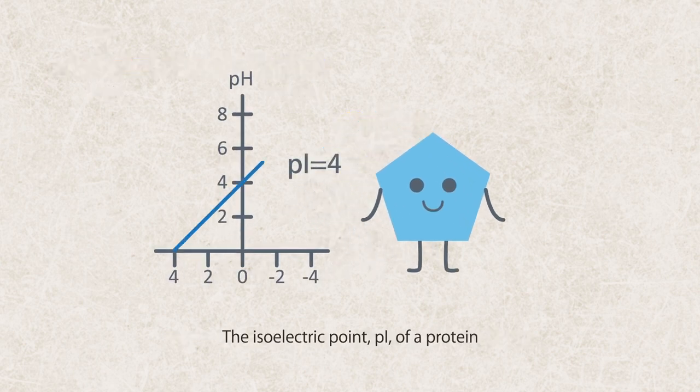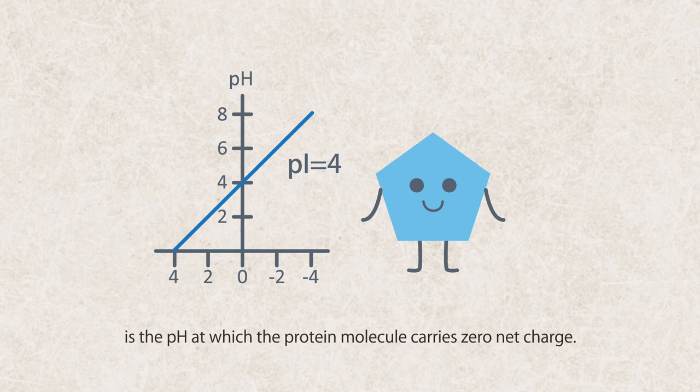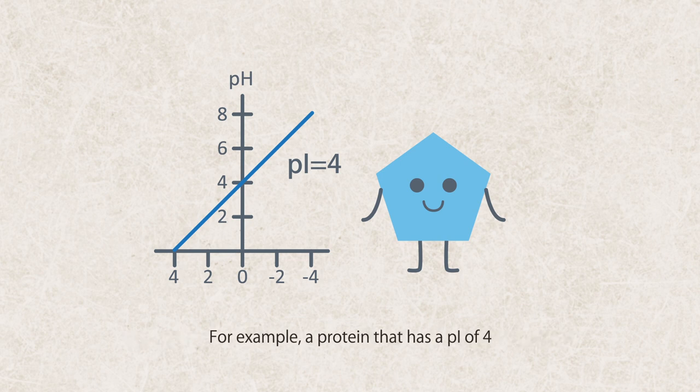The isoelectric point PI of a protein is the pH at which the protein molecule carries zero net charge. For example,